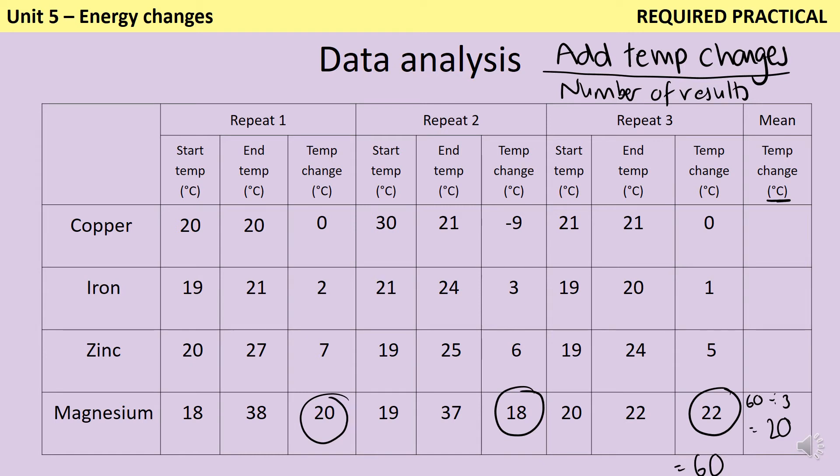Now, when I look at copper, I can see that something a little bit strange has happened. I've got one piece of data that doesn't fit the pattern of the other two, and this is what we call an anomaly, or sometimes an anomalous result. And when you have an anomaly that doesn't fit the pattern of the rest of your pieces of data, then you shouldn't include it in your data analysis. So trying to work out the mean for copper, I wouldn't actually include that minus 9, I would just include the two zeros, which is going to give me a temperature change of 0.